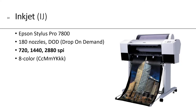Another example of an output device that uses spots would be inkjet, abbreviated IJ. We have an Epson Stylus Pro 7800. It has 180 nozzles, and that technology is called DoD, or Drop-on-Demand. It has various resolutions from 720 to 1,440 to 2,880 spots per inch. This device has eight colors: a dark cyan, a light cyan, a dark magenta, a light magenta, a yellow, a black, a light black, and a very light black.